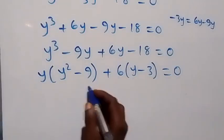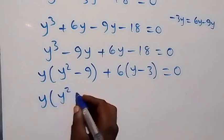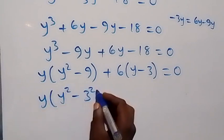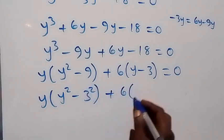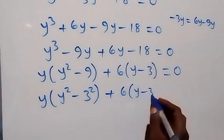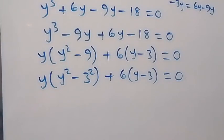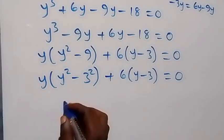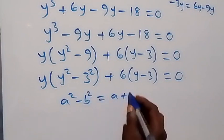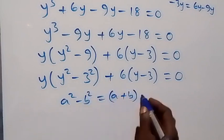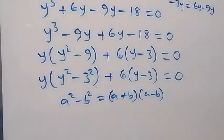That is here, we can express this as y into bracket y squared minus 3 squared — as 3 times 3 is 9 — then plus 6 into bracket y minus 3, equals 0. Then from the identity a squared minus b squared equals a plus b multiplied by a minus b, this follows that pattern.